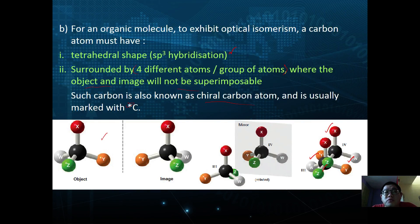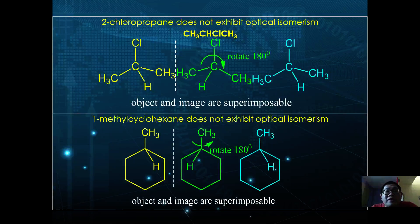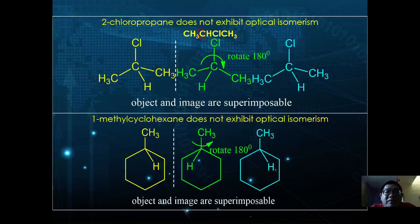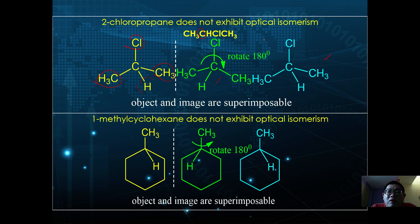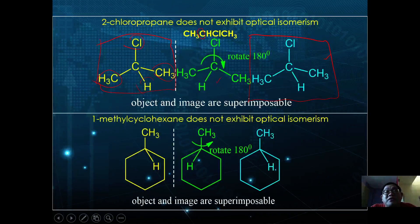The most important point is the carbon must be surrounded by four different atoms or groups. For example, 2-chloropropane does not exhibit optical isomerism because the second carbon is surrounded by H, Cl, and two CH3 groups. When reflected and rotated 180 degrees, the object and image are completely superimposable, so it does not exhibit optical isomerism.